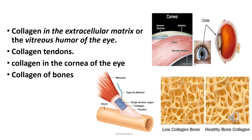In the cornea of the eye, collagen is stacked so as to transmit light with a minimum of scattering. Collagen of bones occurs as fibers arranged at an angle to each other so as to resist mechanical shear from any direction.